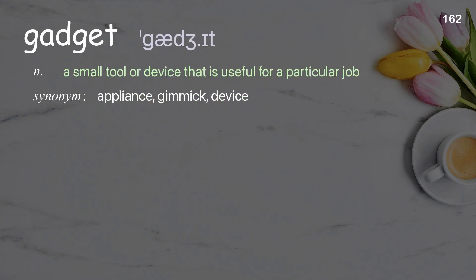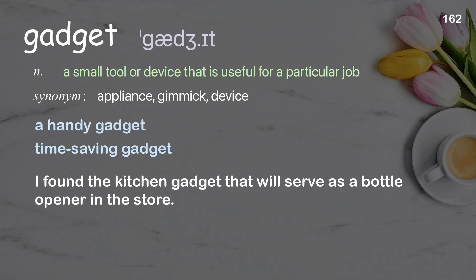Gadget: a small tool or device that is useful for a particular job. Examples: a handy gadget, time-saving gadget. I found the kitchen gadget that will serve as a bottle opener in the store.